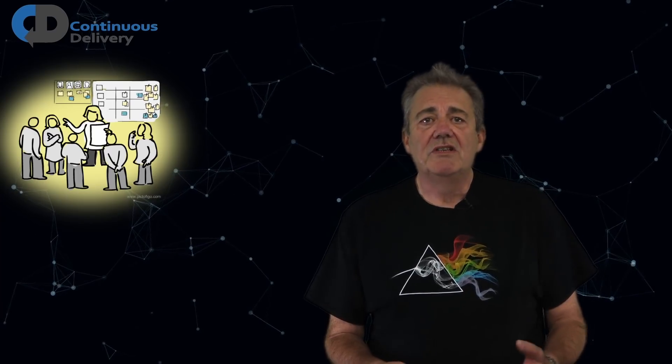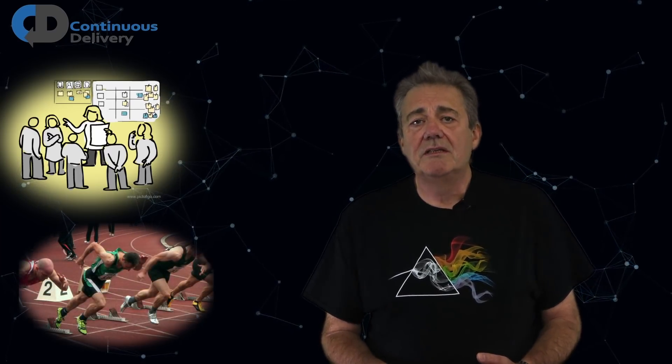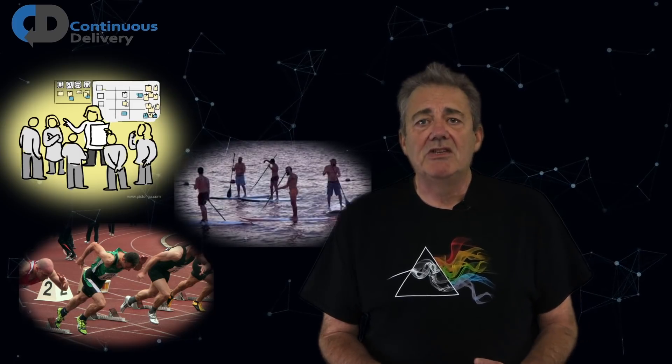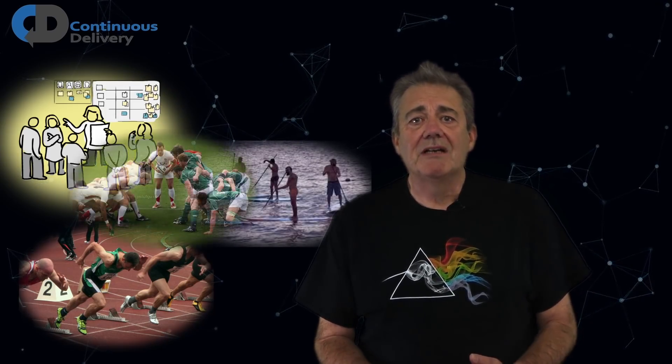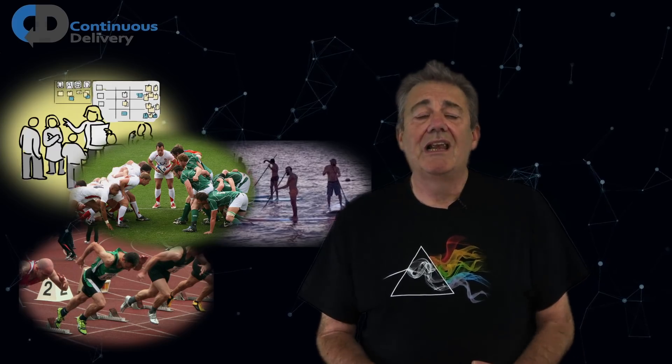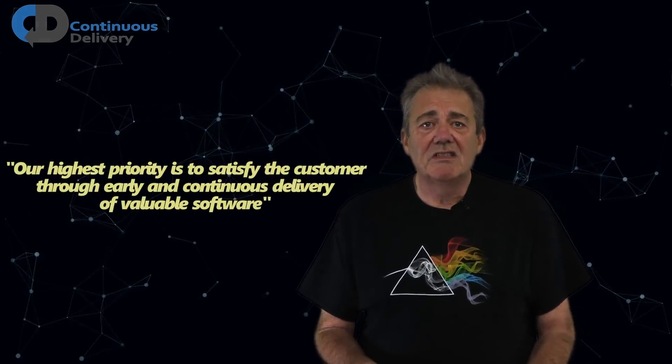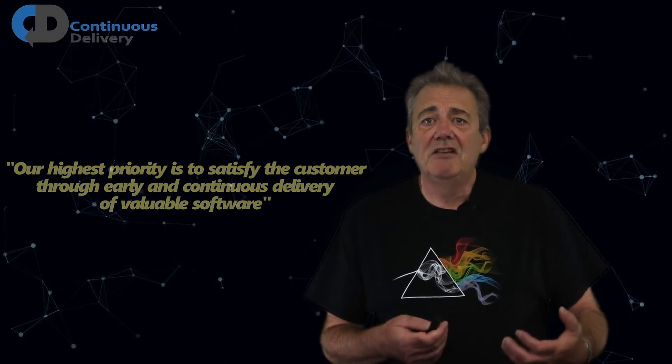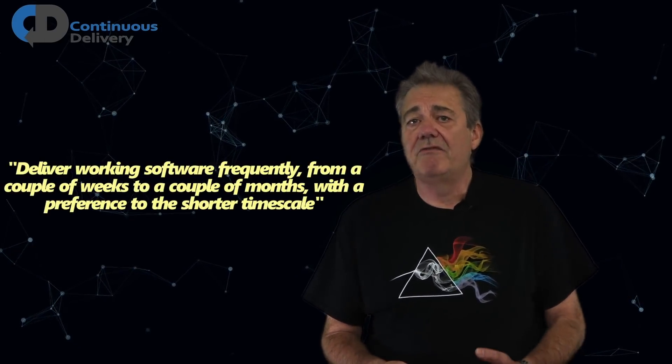I think that it's evident that scrum won the race to be the most popular agile approach. I think that this is for a very practical but rather disappointing reason. It's the easiest one to cheat. If you send people on a scrum master courses, start calling two or three weeks at a time a sprint and have meetings without any chairs, you can claim to be practicing scrum. You aren't, but you can claim it.